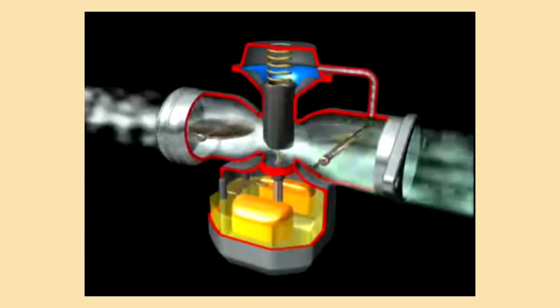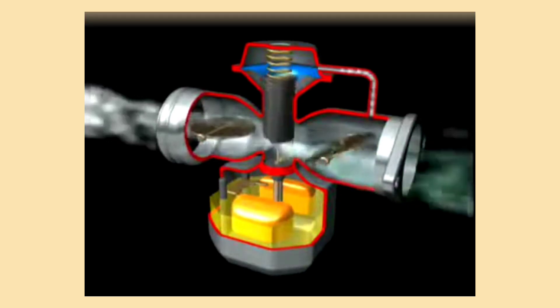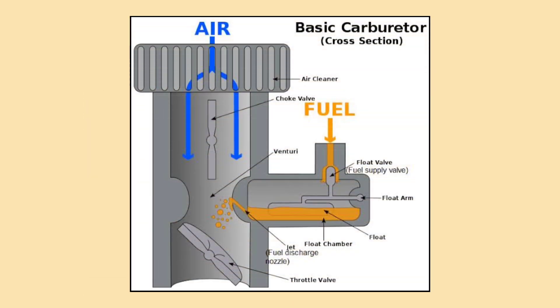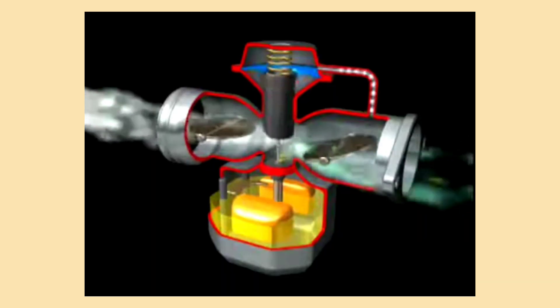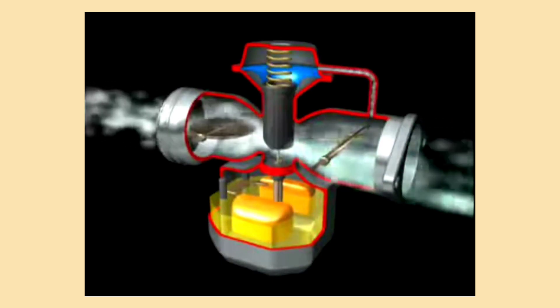As air flows through the carburetor, it passes over a throttle plate that controls how much air enters the engine. Inside the carburetor, there's something called a float chamber that keeps the fuel at the right level. The suction from the air creates a vacuum that pulls fuel into the air stream, and this mixture is then sent to the engine.